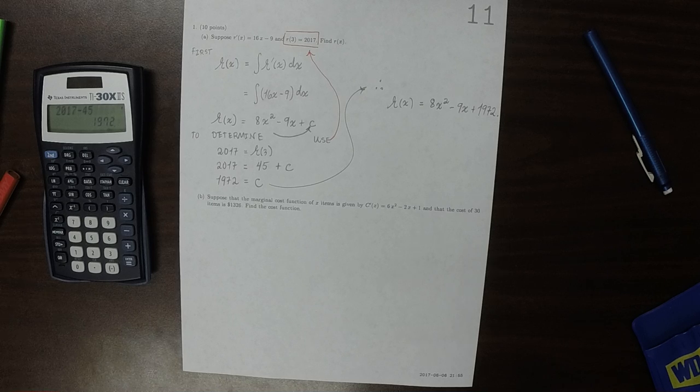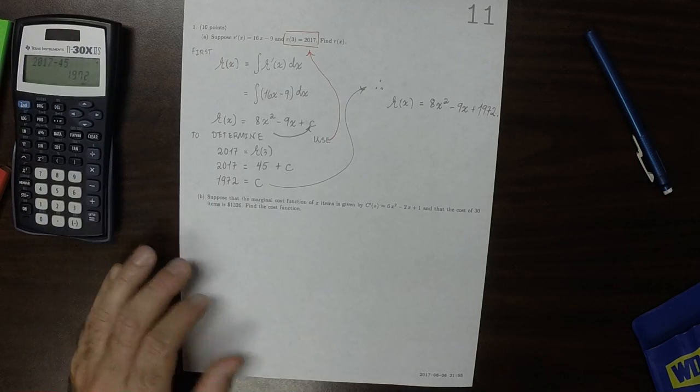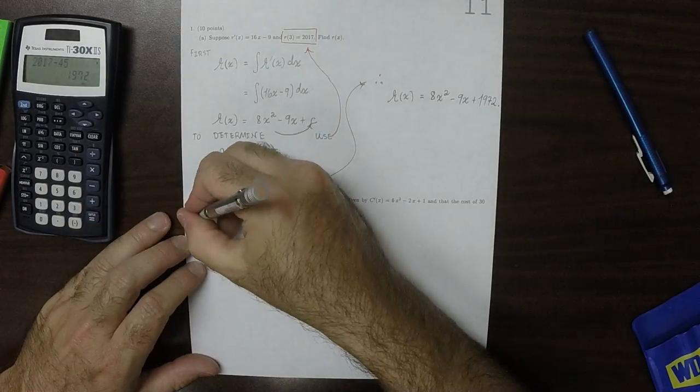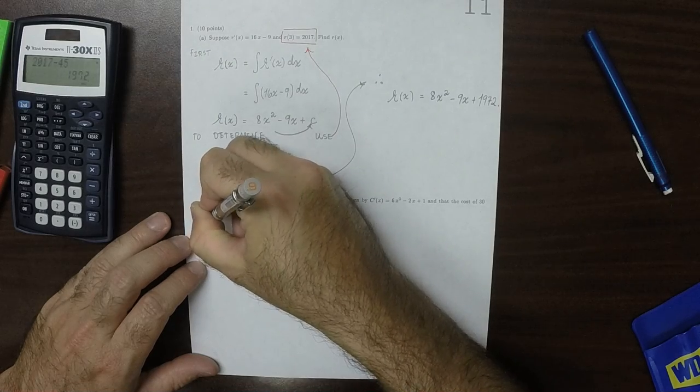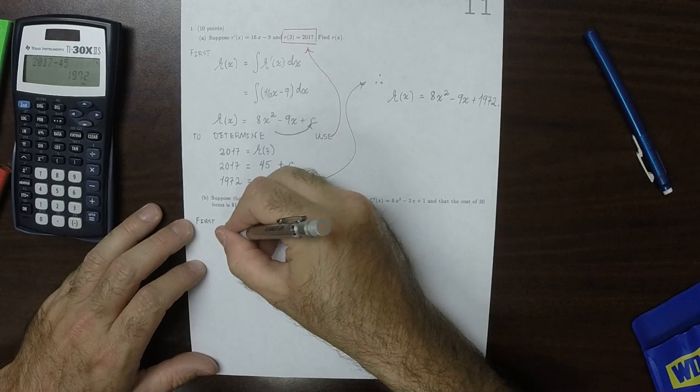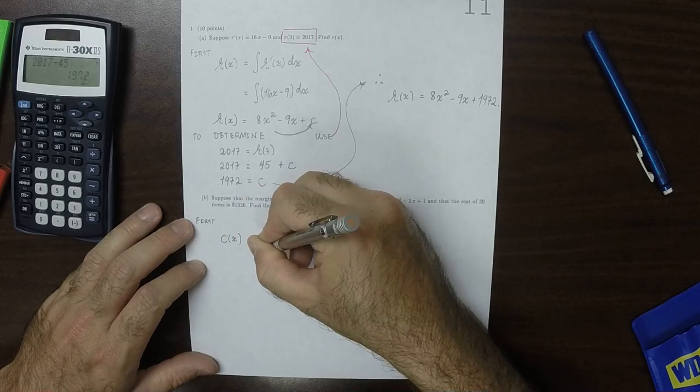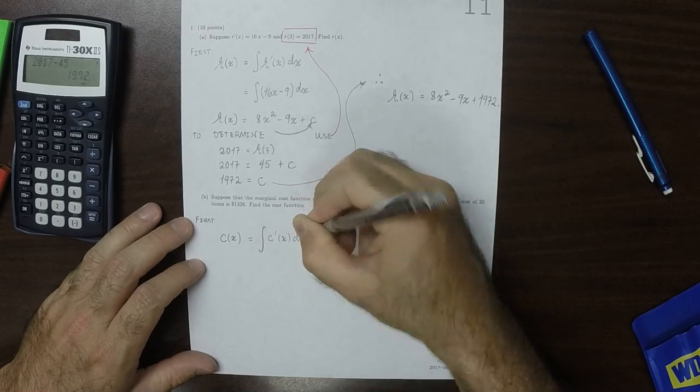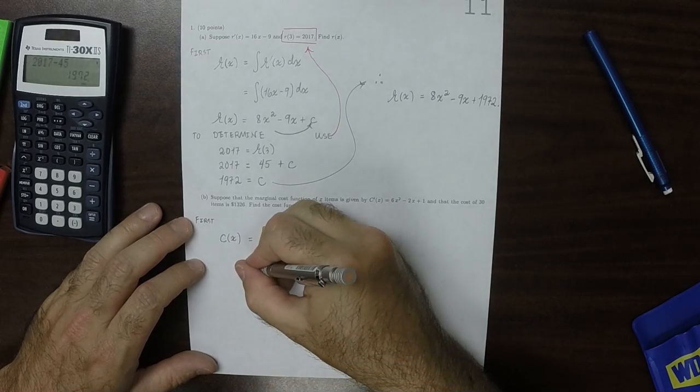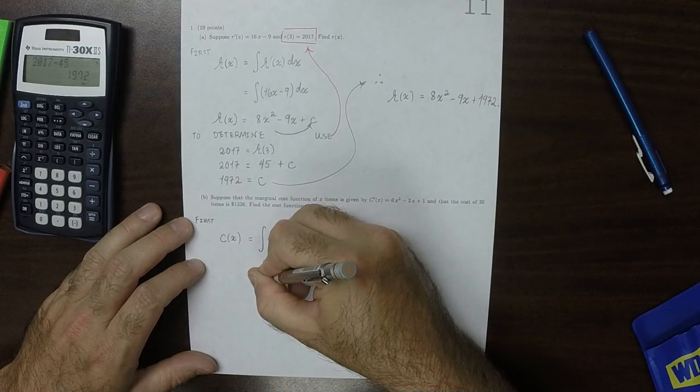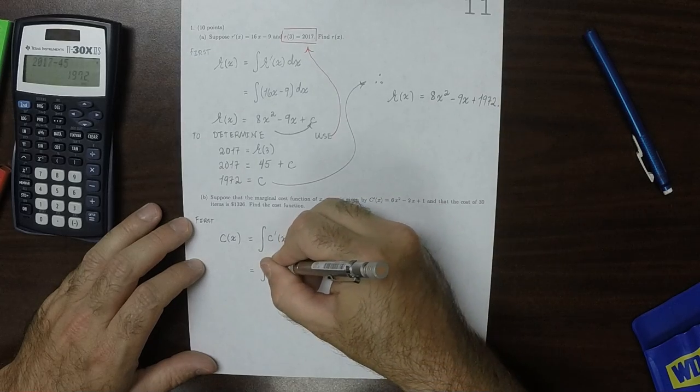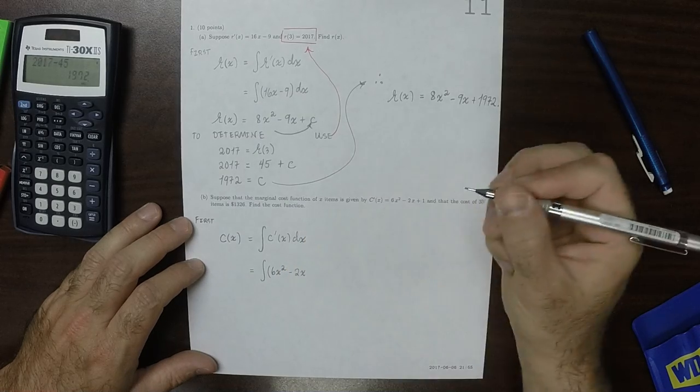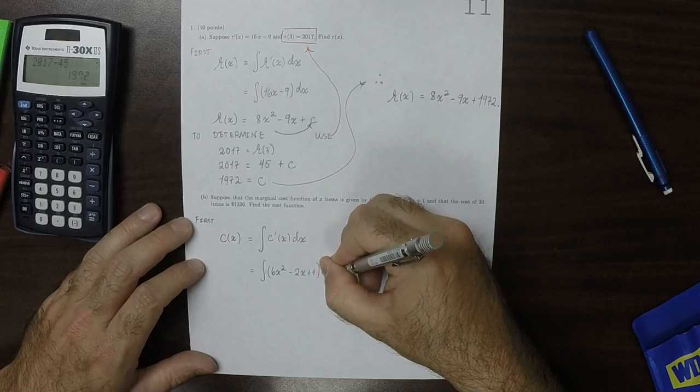So part b is exactly the same question, but the structure is exactly the same, except the numbers are different, more or less. So the first thing is that the cost function c of x is the antiderivative of the derivative of the cost function. So that will be the antiderivative of that thing there. So 6x squared minus 2x plus 1 dx.